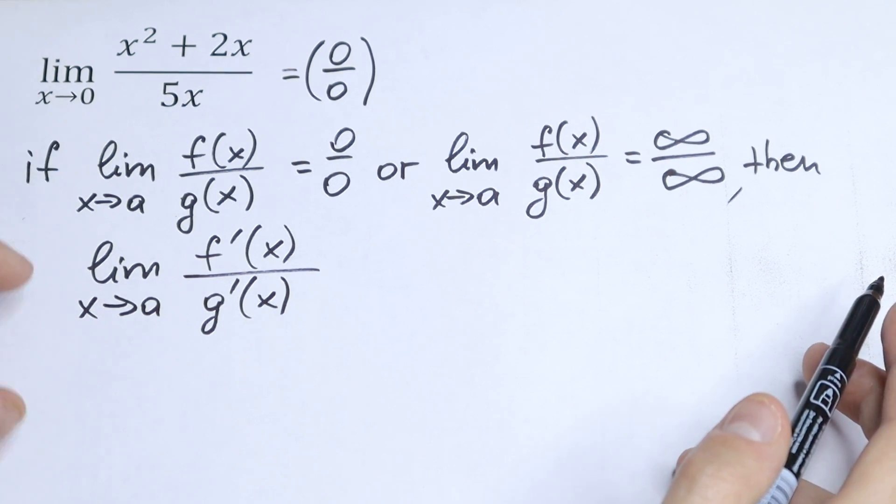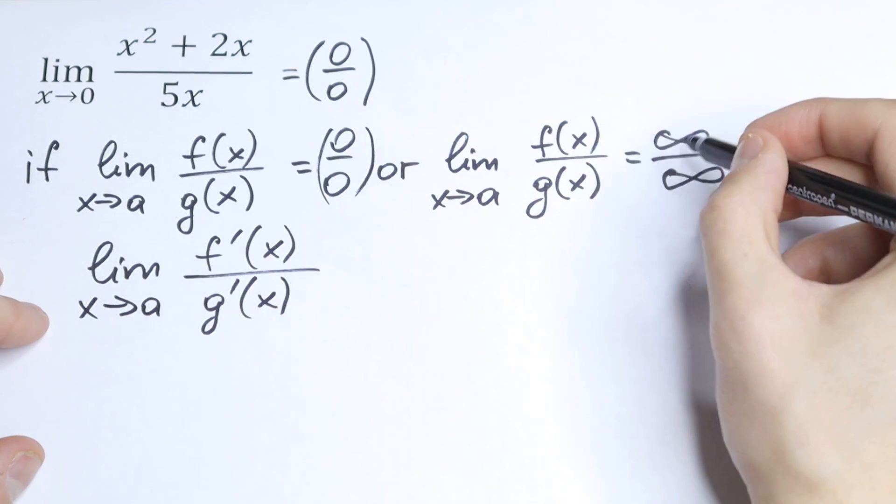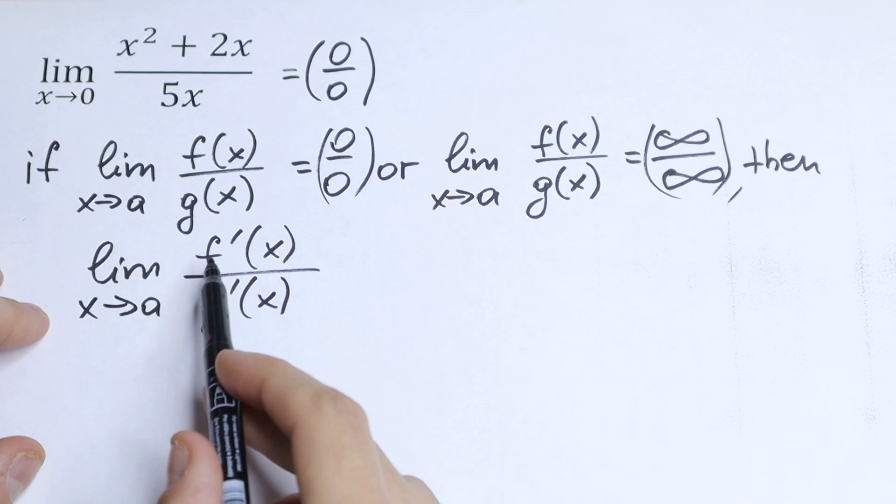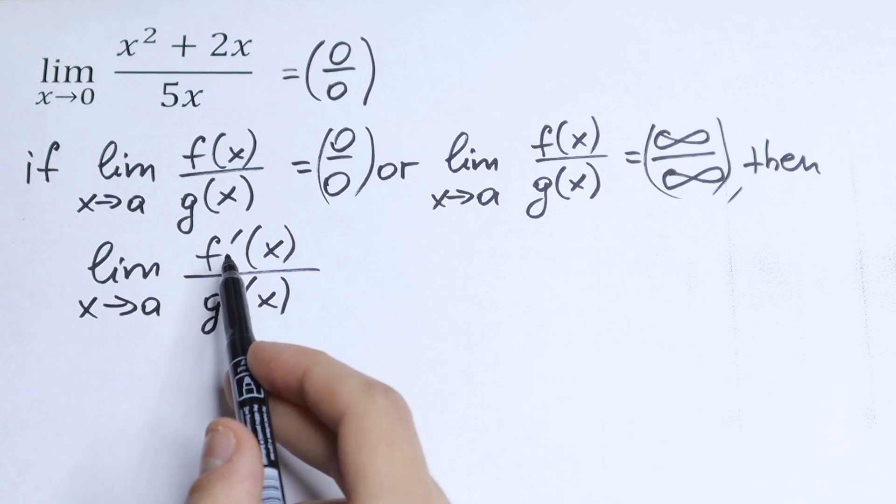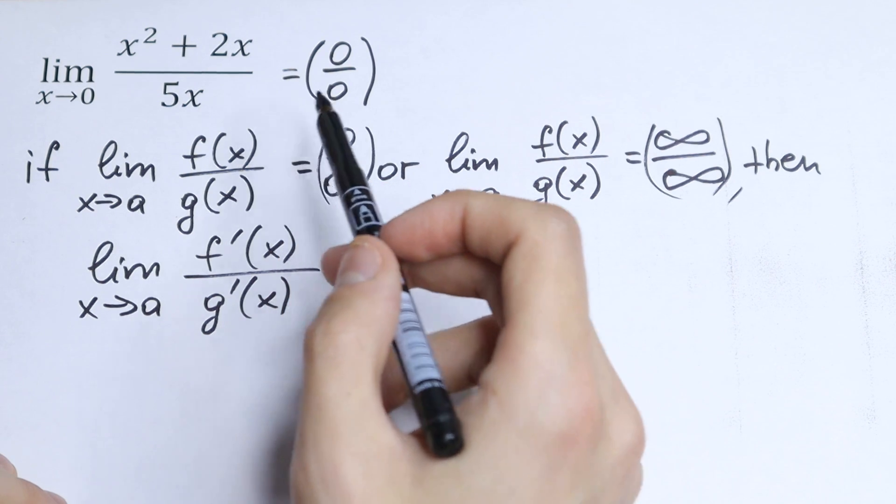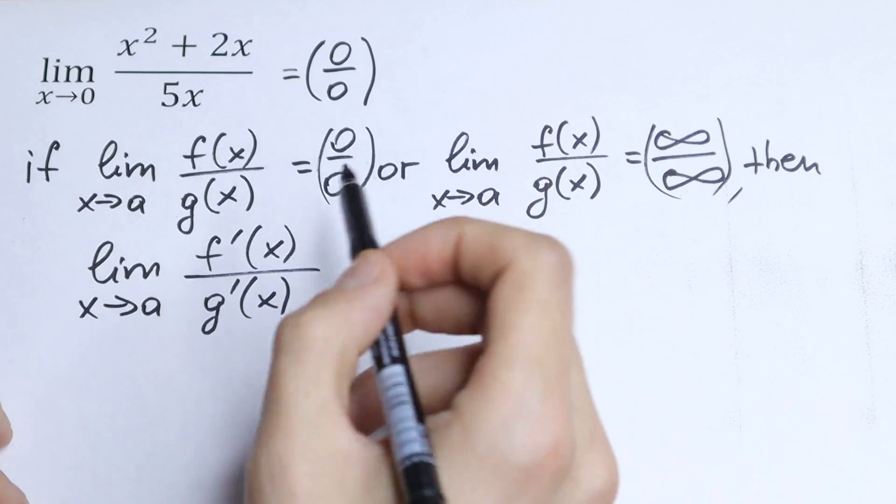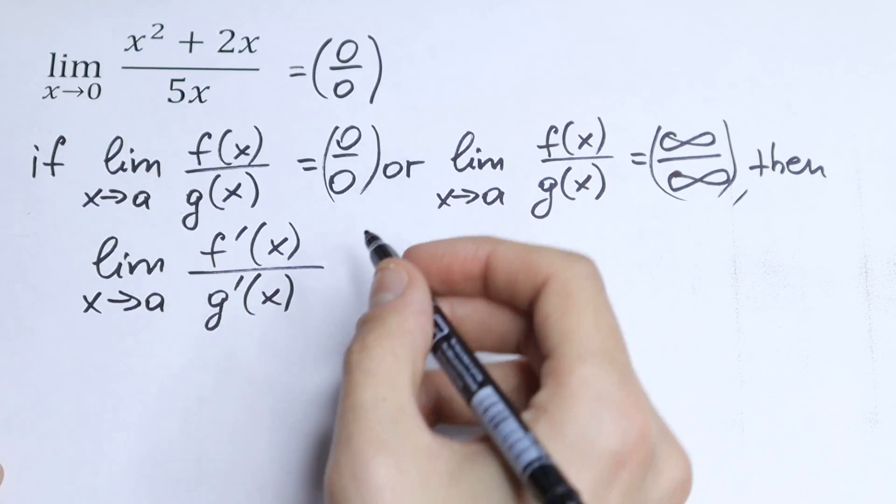It's really good, it's the best rule to solve this limit, because if we have undefined answer 0 over 0 or we have infinity over infinity, we can take our derivative from numerator and denominator and we can solve this. So let's use this rule, let's find derivative from this expression in our numerator and from this in our denominator.